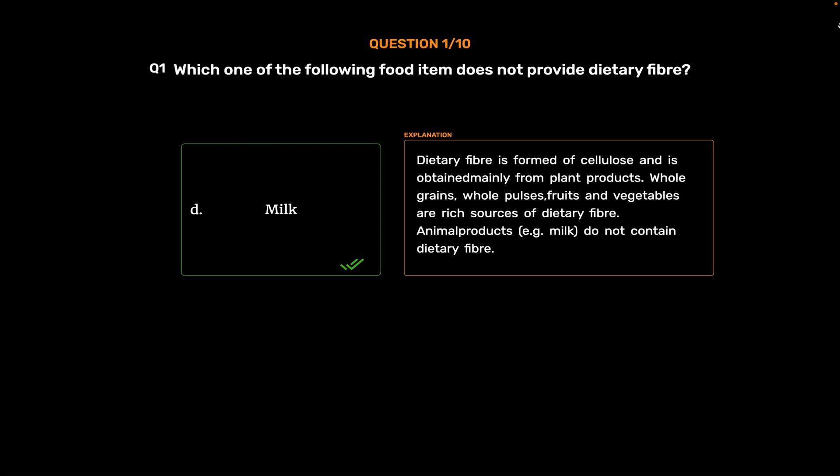Whole grains, whole pulses, fruits and vegetables are rich sources of dietary fiber. Animal products, for example milk, do not contain dietary fiber.